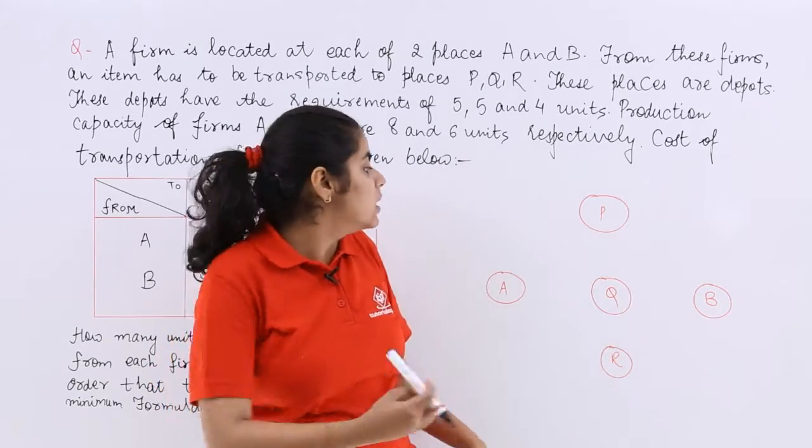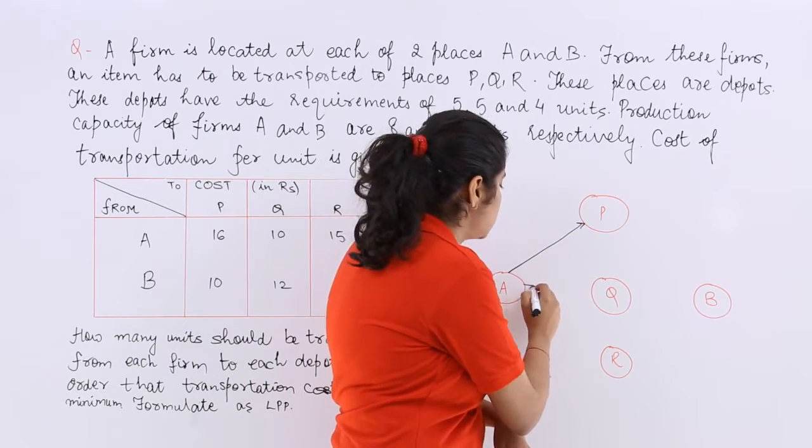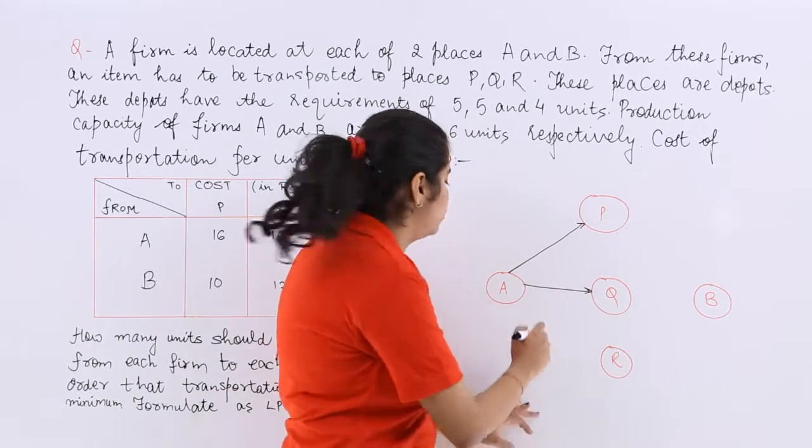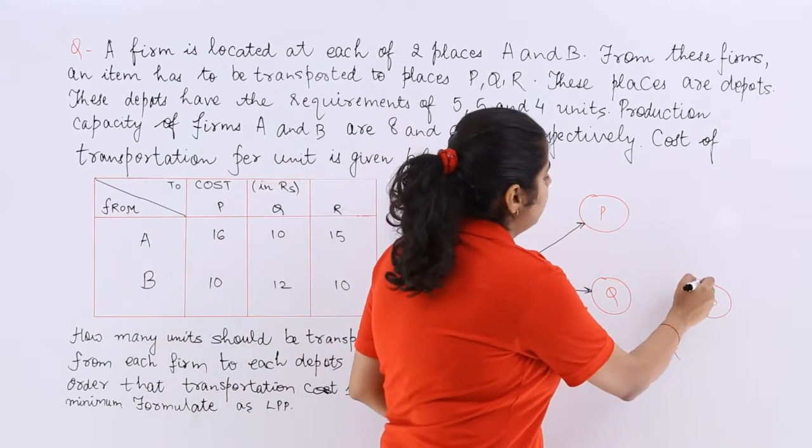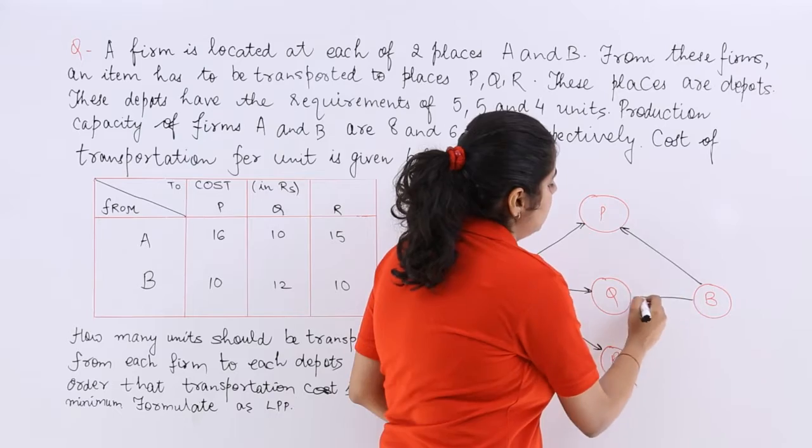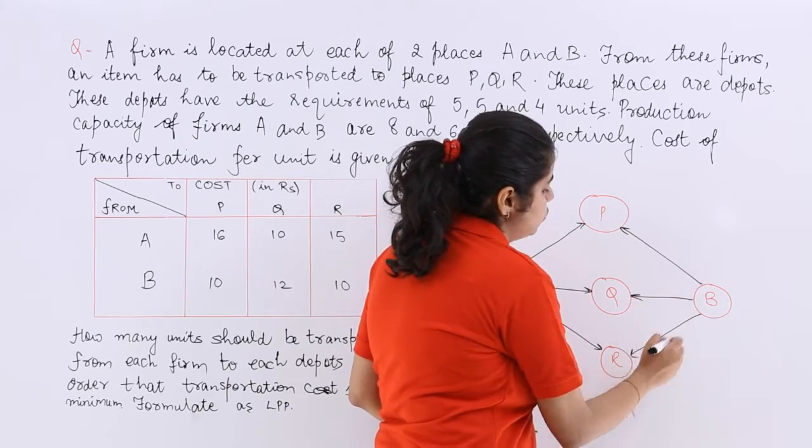So these are P, Q, R. That means from A to P something has to be transferred, from A to Q, then from A to R. Similarly from B to P, from B to Q, from B to R.